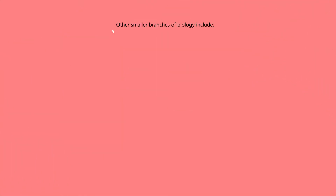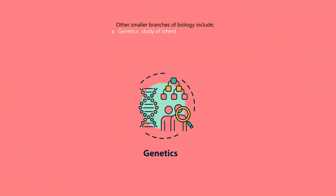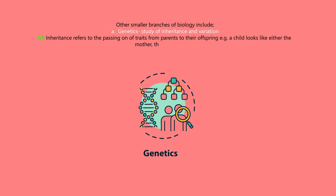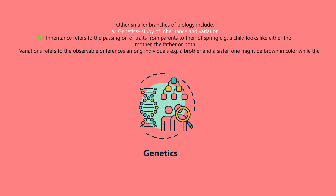Other smaller branches of biology include: A. Genetics — the study of inheritance and variation. Inheritance refers to the passing on of traits from parents to their offspring; for example, a child looks like either the mother, the father, or both. Variation refers to the observable differences among individuals — for example, a brother and a sister: one might be brown in color while the other is dark-skinned, or one can be tall while the other is short.